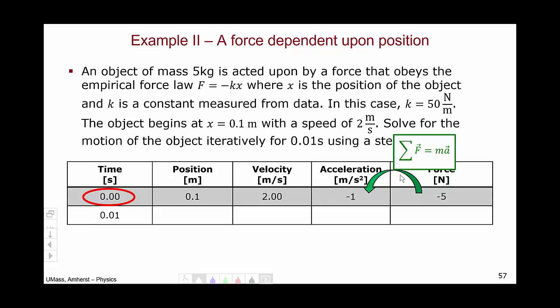So our force and our acceleration are in opposite directions from our velocity. Our velocity is positive. Our acceleration is negative. Thus, from our unit 1 knowledge, we can predict that the object should probably slow down when we go from 0.00 to 0.01.